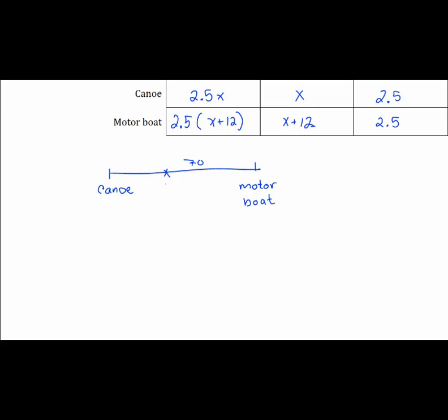Now, we add the distances together to get the full 70 miles that they start out apart, and that tells us how to get our equation. 2.5x is the distance the canoe travels, plus 2.5(x + 12) is the distance that the motorboat travels, and if we add these together we should get the total distance of 70 miles.